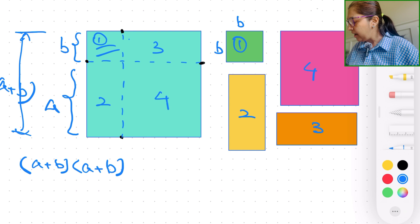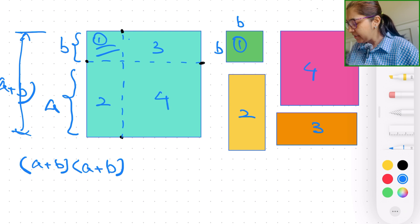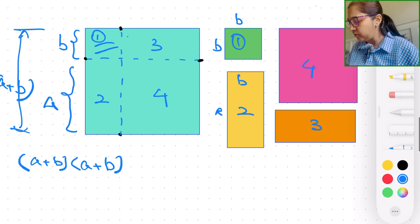So the side length for the small one is going to be b units. Let's see the number 2 now. Number 2, one side length we have is a, which is here. And the other one is going to be b.